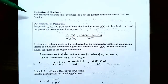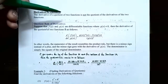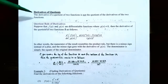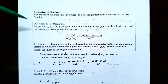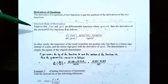So, derivatives of quotients. Just like there was a formula for the product rule, there's also a formula for how to find the derivative of a quotient of two functions. The derivative of the quotient of two functions is not the quotient of the derivatives of the two functions. In other words, you can't take the derivative of the numerator and the derivative of the denominator and then divide the two answers. There's a formula called the quotient rule.